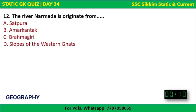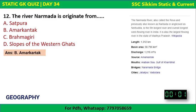Geography Question 2: The river Narmada originates from which place? The correct answer is Amarkantak. River Narmada, also previously known as Narbada, is the fifth longest river in India and the longest west-flowing river in India overall.